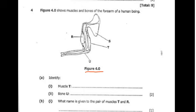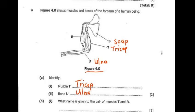So we write tricep for muscle T and ulna for bone U. Also, S is the scapula and R is the biceps.